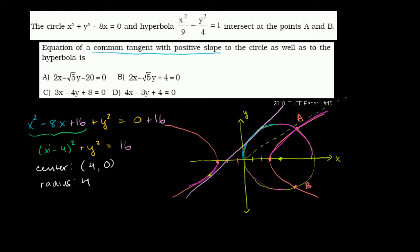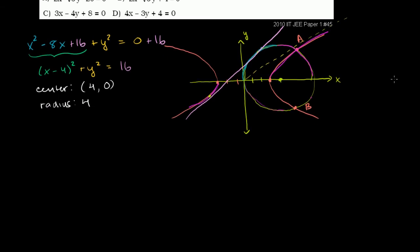Now that we have a visual sense of what this common tangent with a positive slope would look like, let's see if we can get some constraints on it, especially constraints on its slope and y-intercept. So this line that I drew in the last video here in pink, it would have the form y equals mx plus b, where m is the slope and b is the y-intercept. Now, let's think about what constraints there would have to be on m and b if this is tangent to the circle.